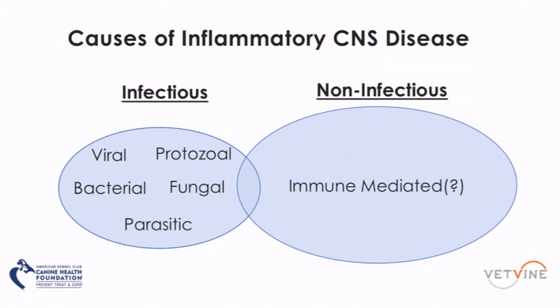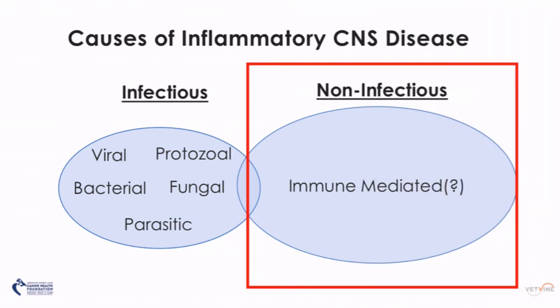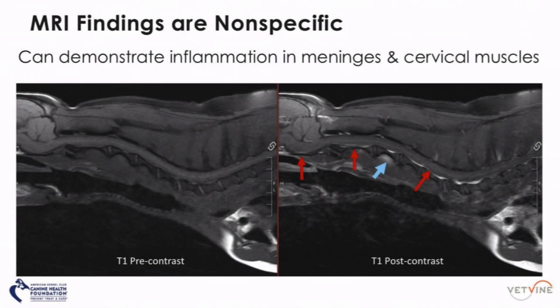With respect to the causes of inflammatory neurologic disease in dogs, we tend to break it into infectious and non-infectious causes. In reality, infectious causes of inflammatory CNS disease are a very small component of what we deal with in our dog population. The most common category of disease we see is non-infectious. This is a group of disorders believed to be immune-mediated in origin, and these immune-mediated non-infectious disorders are what I'm going to focus on for this presentation.